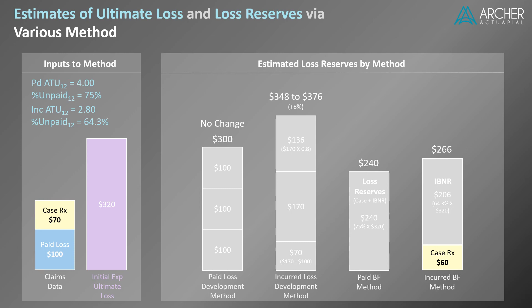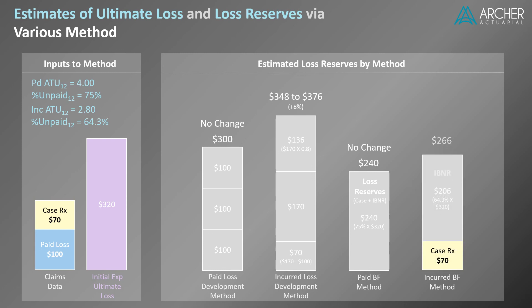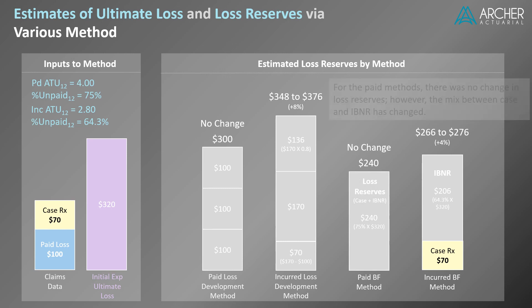Loss reserves via the paid BF method are also unaffected. Lastly, loss reserves via the incurred BF method would increase by $10, from $266 to $276, about a 4% increase. Notice here that the estimate of IBNR via this method is unaffected by the increase in case reserves. Note that for the paid methods, there was no change in total reserves; however, the mix between case and IBNR has changed.